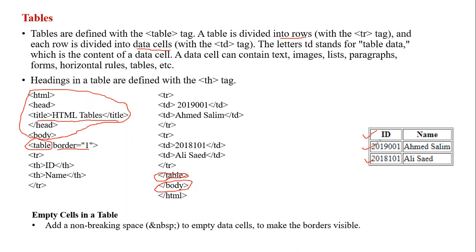You must write table open and table close. Inside, you use TR for table row. TR open and TR close defines one row. The first row has ID and Name - since they appear bold, that is heading style. You write TH for table heading - T is for table, H is for heading. Writing TH makes the text bold like a heading.